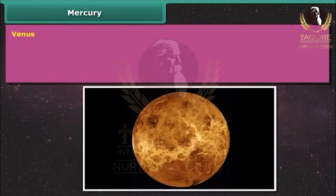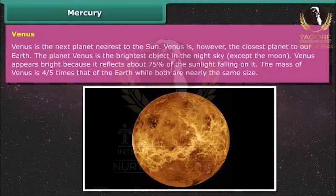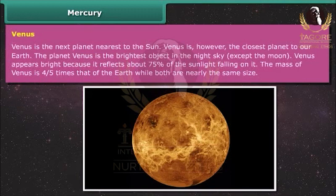Venus is the next planet nearest to the Sun and is, however, the closest planet to the Earth. The planet Venus is the brightest object in the night sky except the Moon. Venus appears bright because it reflects about 75% of the sunlight falling on it. The mass of Venus is four-fifths that of the Earth, while both are nearly the same size.